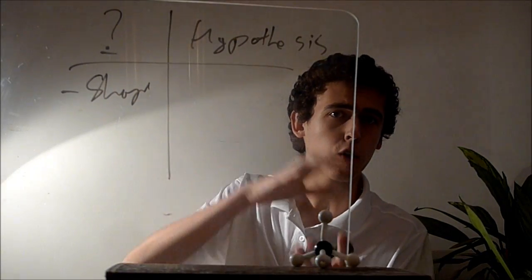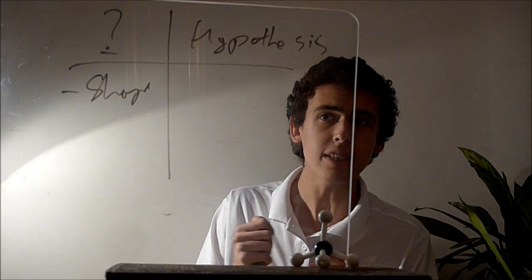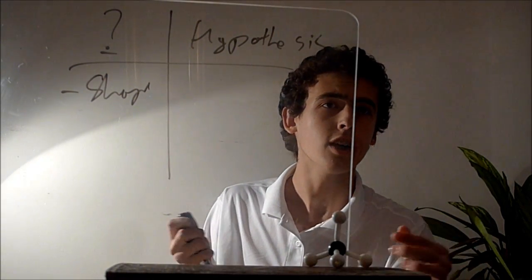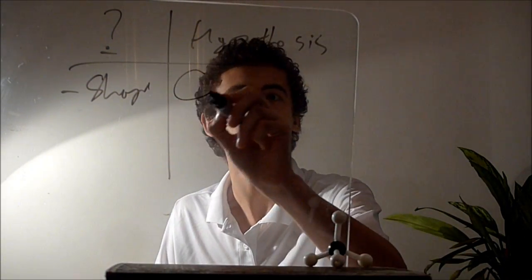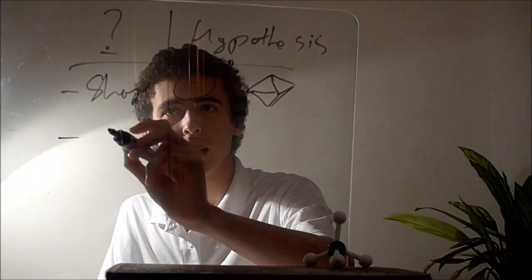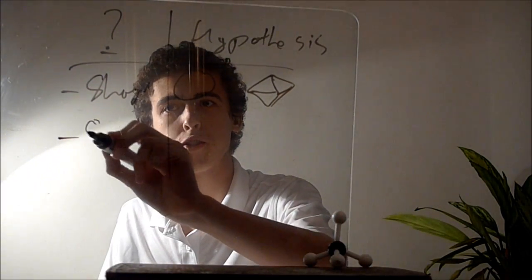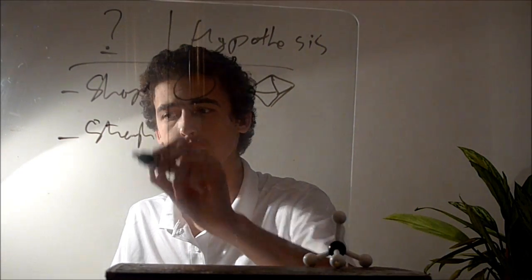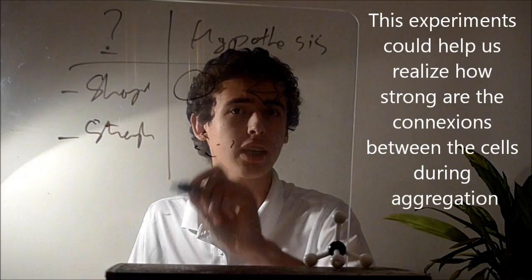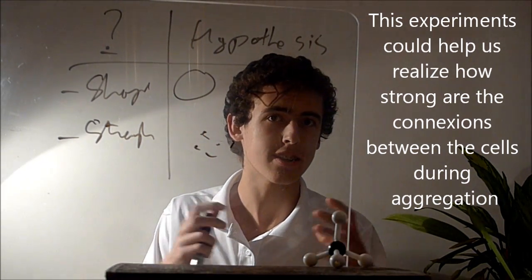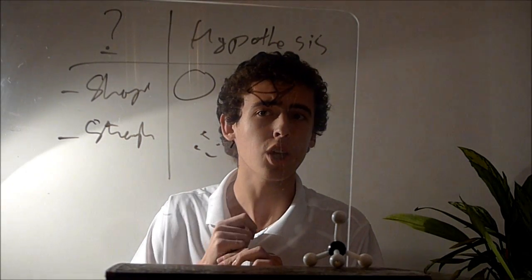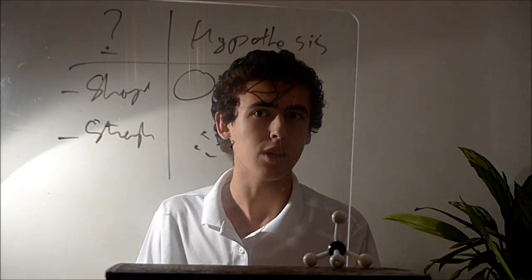On Earth they are crushed one with each other, but in space, as they have a particular form like a methane molecule, we can deduce that it might form a regular sponge or something more geometrically shaped. The strength of the union between the cells could be found within the experiment, and if there is no aggregation, we can deduce that without gravity there is no aggregation.